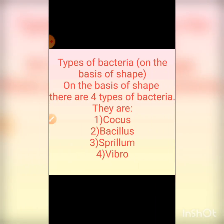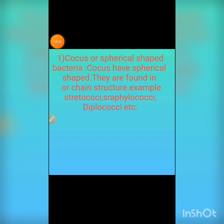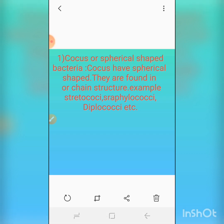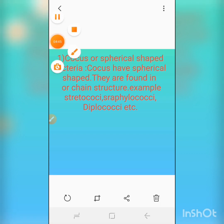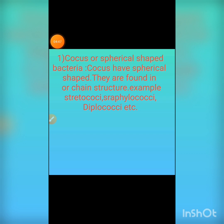Types of bacteria on the basis of shape: There are four types of bacteria. They are Cocci bacteria, Bacillus bacteria, Spirillum bacteria, and Vibro bacteria. Cocci are spherical-shaped bacteria found in chain structure. Examples include Streptococci and Diplococci.